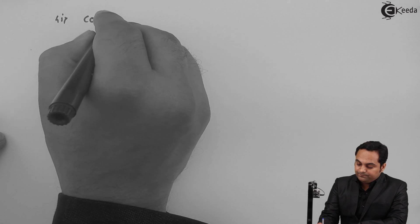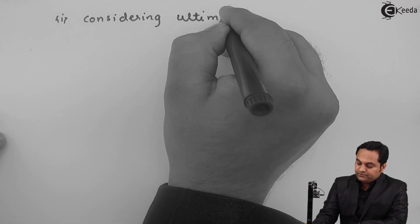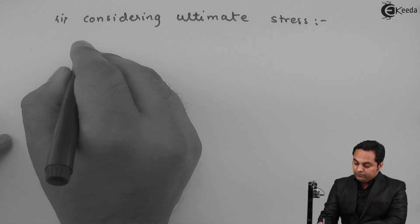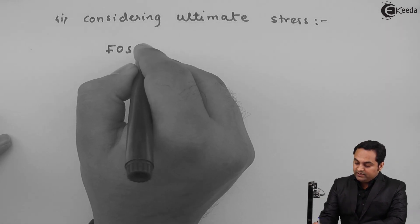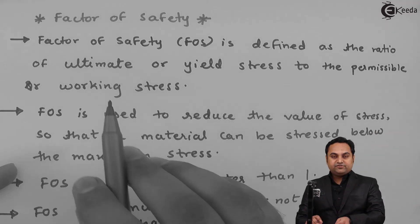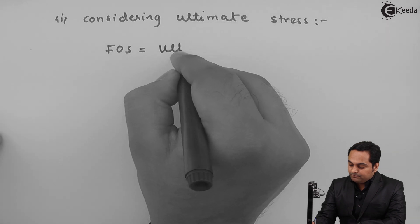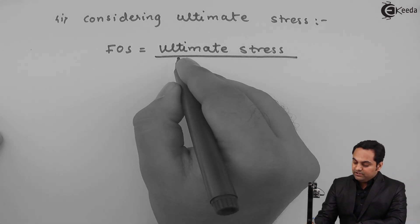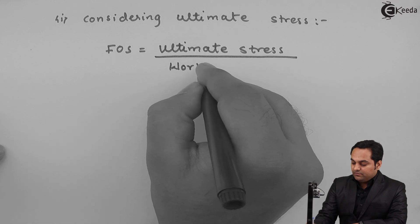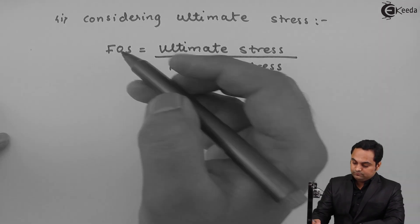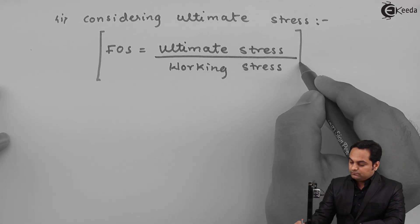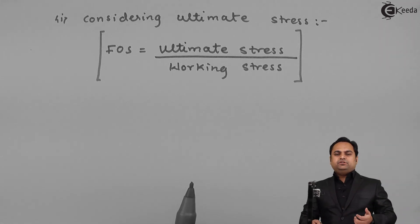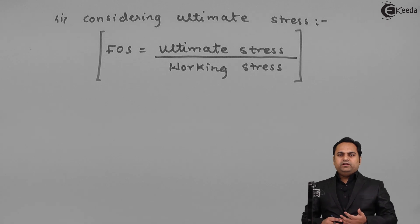Considering ultimate stress: factor of safety is defined as the ratio of ultimate stress to the permissible or working stress. Working stress is the stress to which the object or material is stressed within its working cycle or working life.